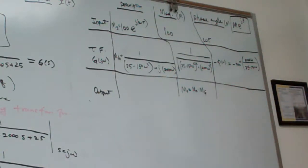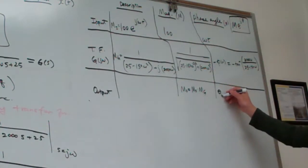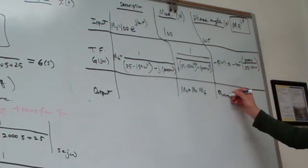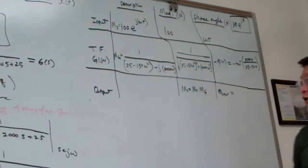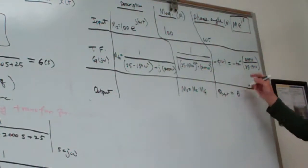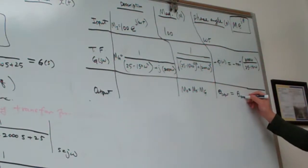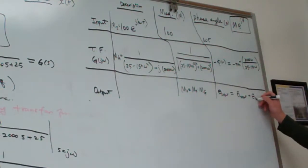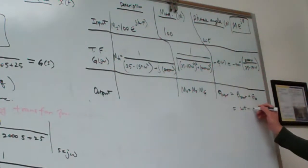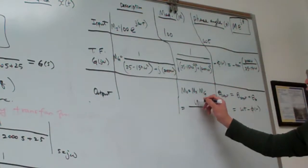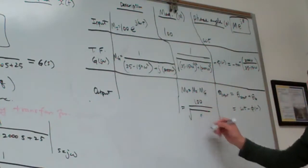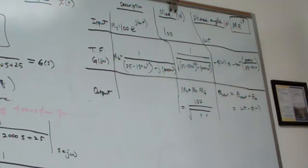And phase angle output equal to, again, if we multiply two numbers, the phase angle simply added up together. So that is the theta of the input plus theta of the transfer functions. So basically, this one is omega t minus phi omega. And this one simply equal to 100 and divide by, we copy that information to here. You good?